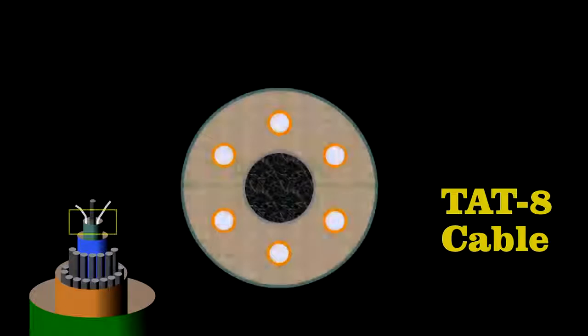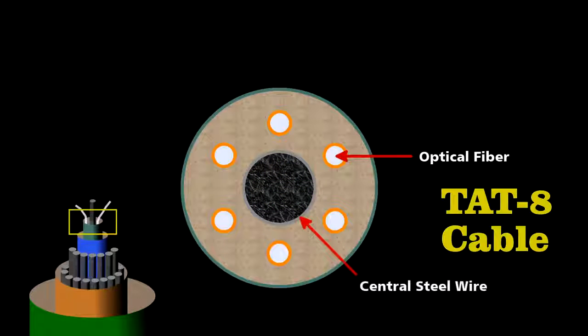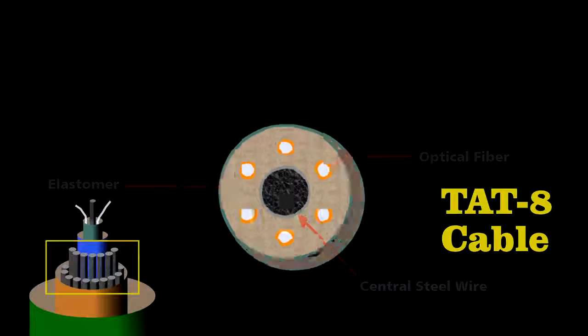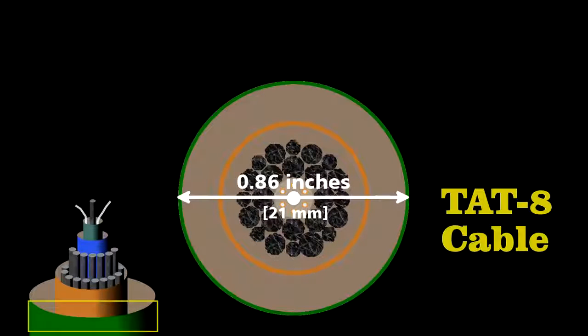Engineers designed the cable carefully to survive on the ocean floor. At its center lies the core. Less than a tenth of an inch in diameter, it contains six optical fibers wrapped around a central steel wire. They embedded this in an elastomer to cushion the fibers, surround it with steel strands, and then sealed it inside a copper cylinder to protect it from water. The final cable was less than an inch in diameter, yet it could handle some 40,000 simultaneous phone calls.